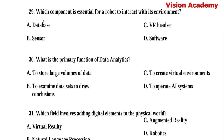Question number 29. Which component is essential for a robot to interact with its environment? Option A: Database. Option B: Sensor. Option C: VR headset. Option D: Software. Here, option B, sensor, is the right answer.